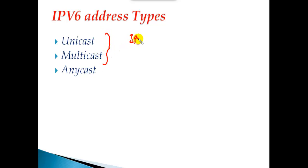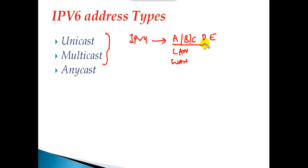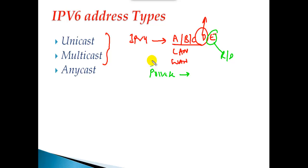In IPv4 we have categories of class A, class B, class C, class D, and class E, where we use classes A, B, C for LAN and WAN purposes. Class D is for multicasting and class E is for R&D. We also have private IP addresses which can be used within your organization but are not recognized on the internet, and public IP addresses which are globally unique and used to send traffic on the internet.